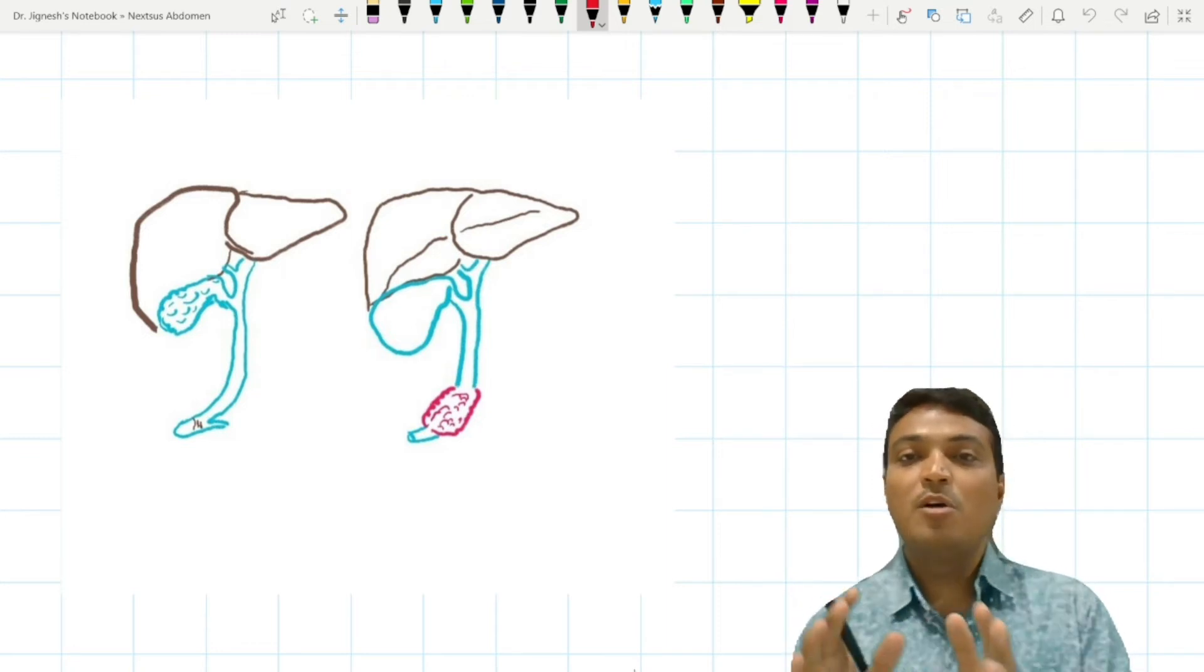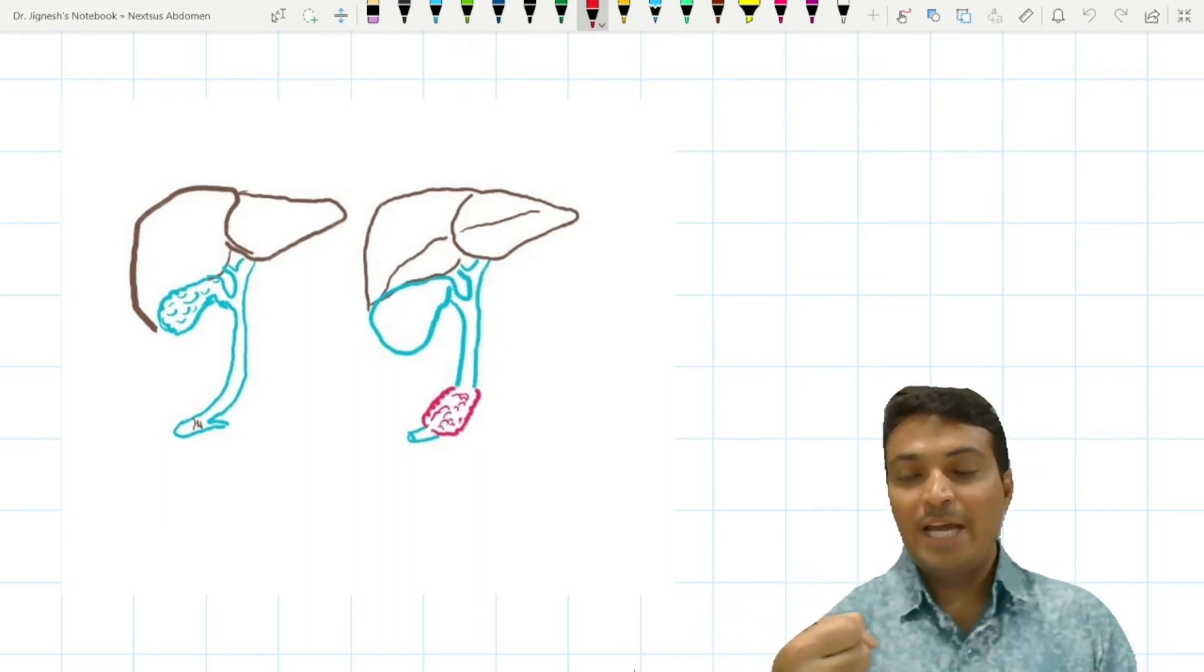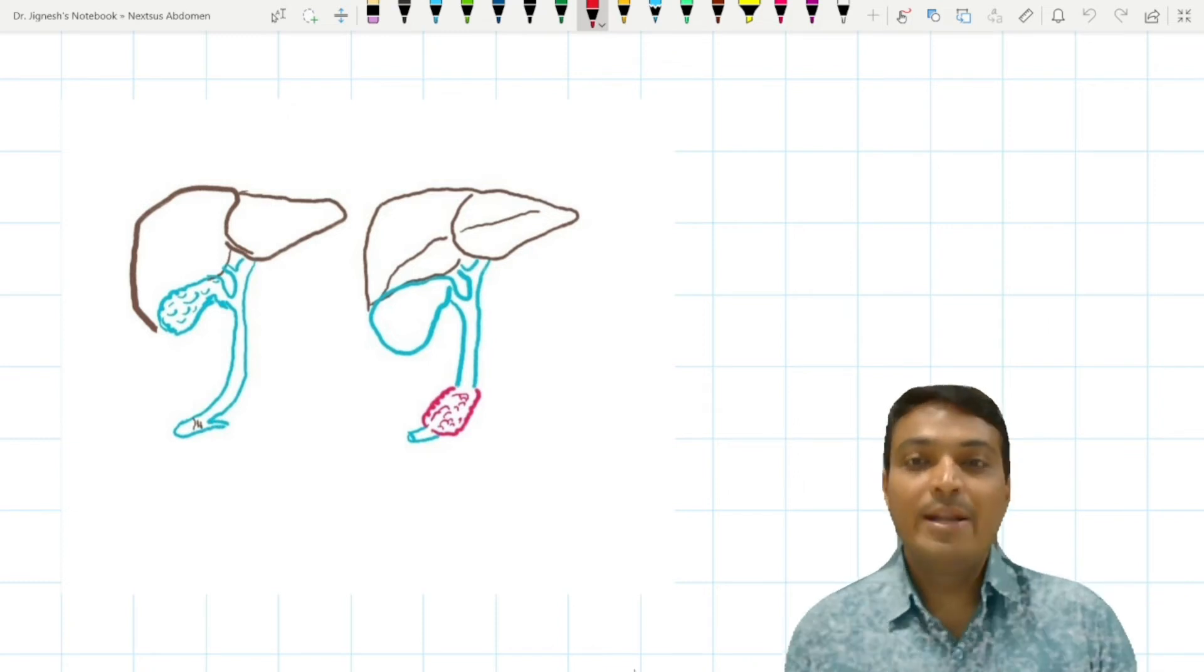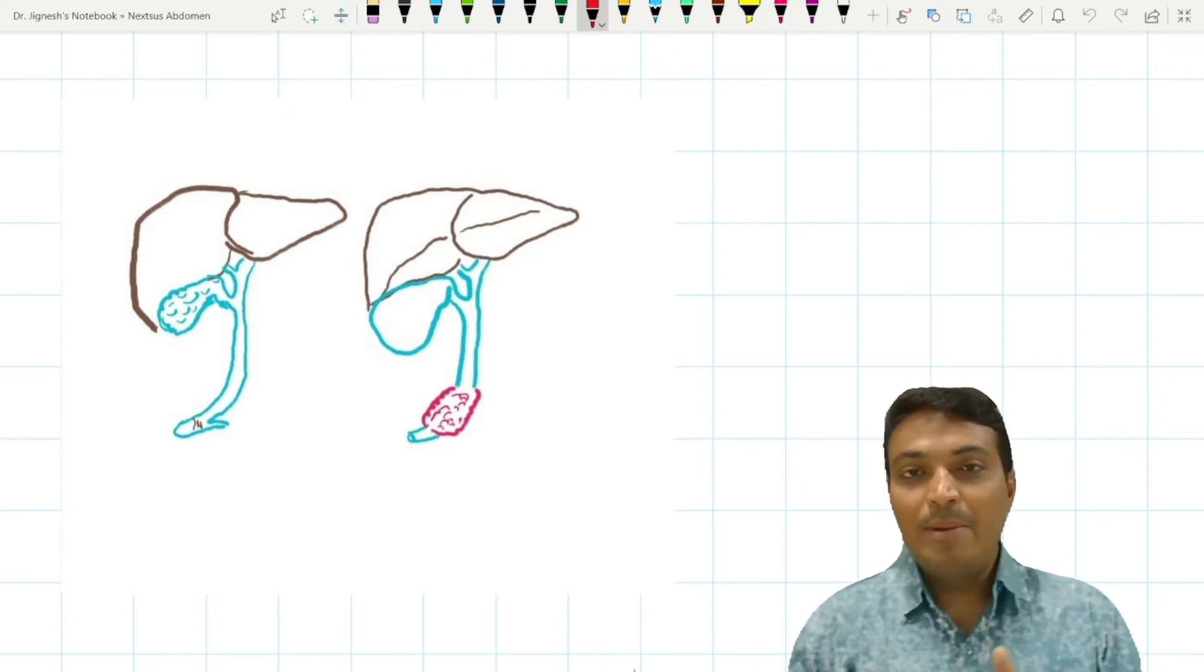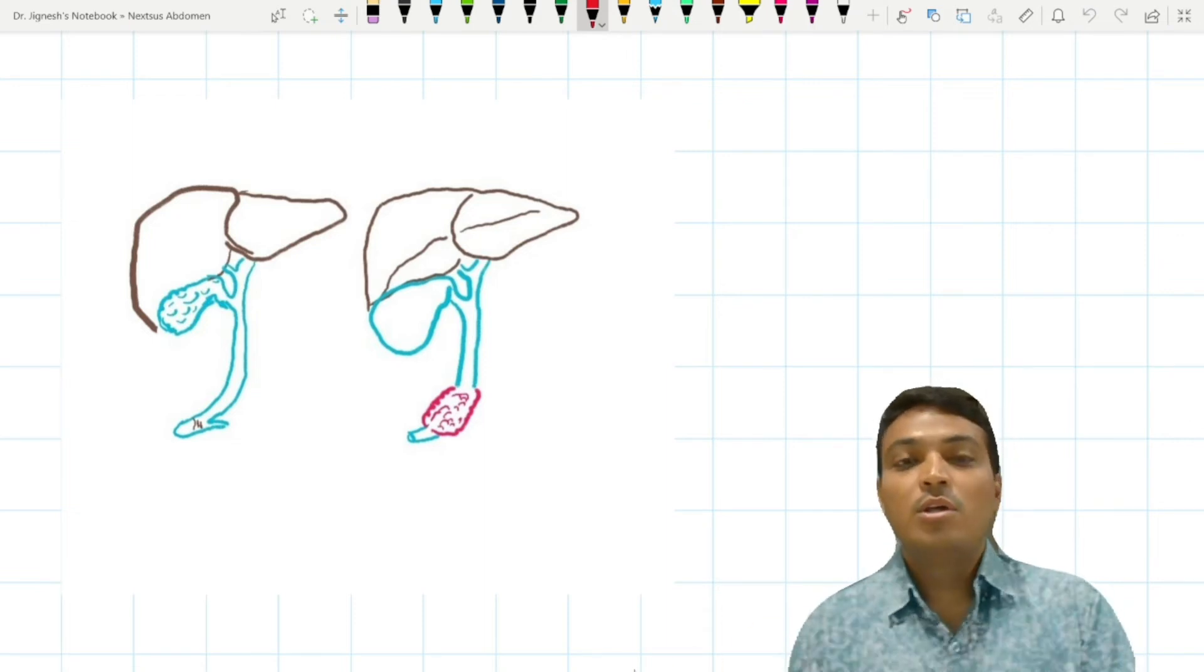In case of carcinoma of the head of the pancreas, most of the time it will lead to blockage of the bile duct and that will lead to dilatation of the gallbladder. And that dilated gallbladder can be palpated under the right costal margin and is painful.